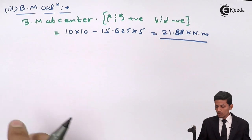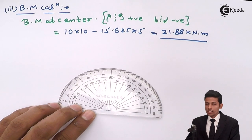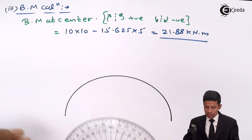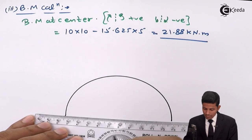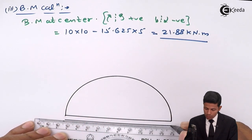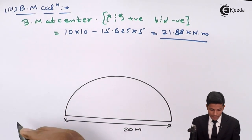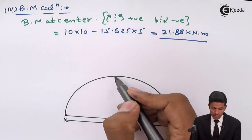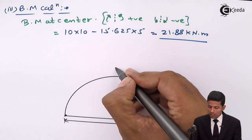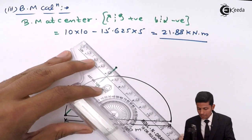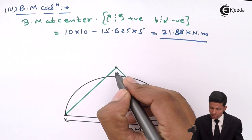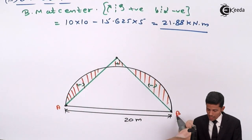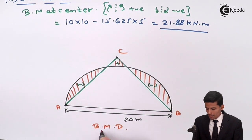Now draw the bending moment diagram. First draw the arch as it is, marking the span as 20 meters. At A the bending moment is 0, at C the value is 21.88 kN·m, and at B the value is 0. Plot the diagram: the value at C comes on the positive side. Join the points to form the bending moment diagram. Label A, B, and C on the diagram.